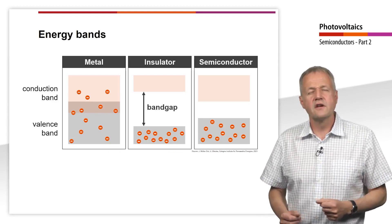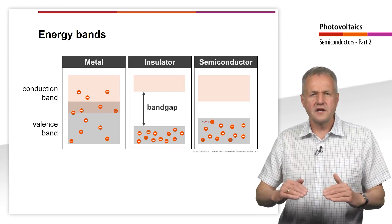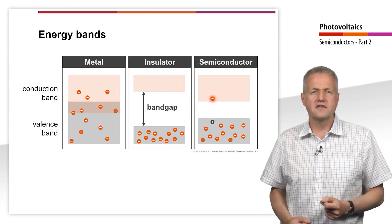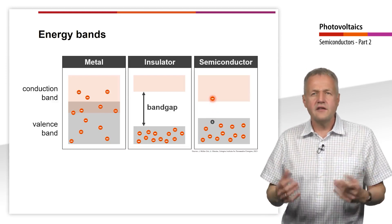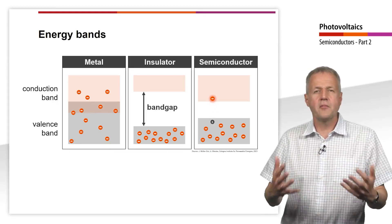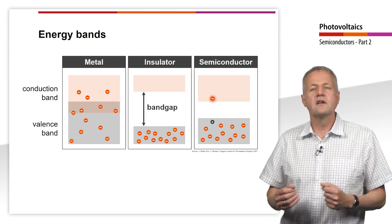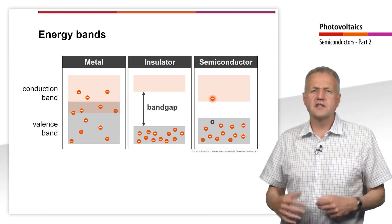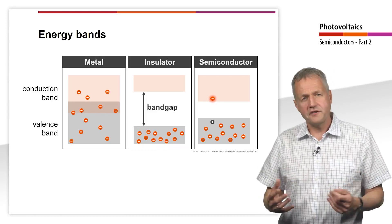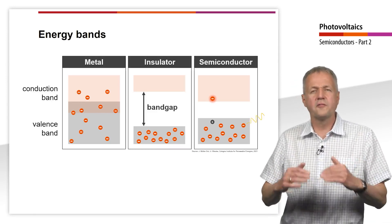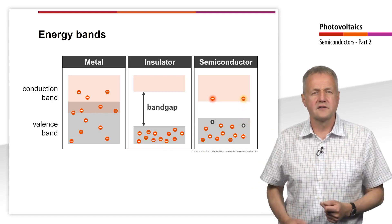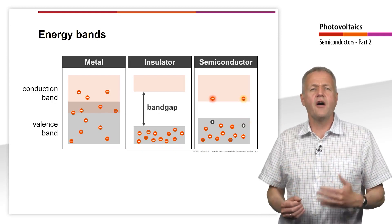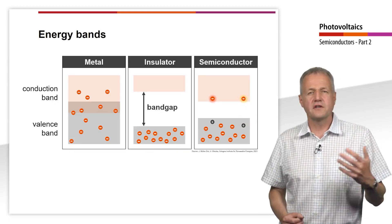In a semiconductor, electrons can be lifted from the valence into the conduction band by thermal excitation. They leave a hole with a positive charge, here marked in dark gray in the valence band. But also the energy of a photon can be sufficient to transport an electron from the valence into the conduction band. The photon must have at least the energy of the band gap before it is absorbed.